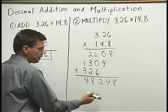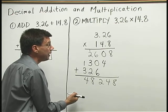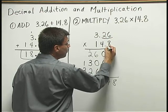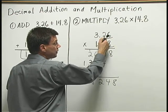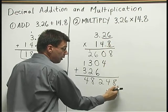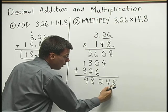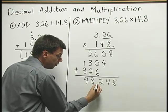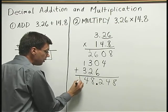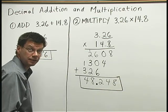And now I need to decide where the decimal point goes in my answer. And that's where the decimals come back into play. What I do is, I count up the total number of decimal places to the right of the decimal points. That's 1, 2, 3 total. Come down to my answer, start at the right. And I count over 1, 2, 3 places from the right and place my decimal point in the answer. So we get 48.248 is my result.